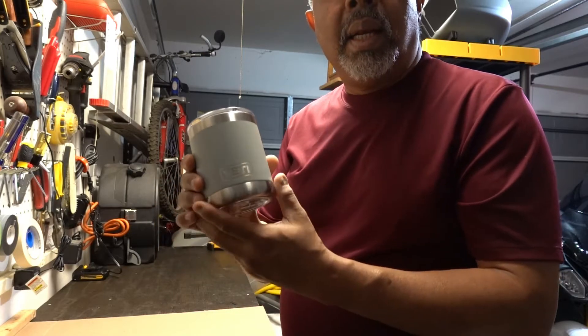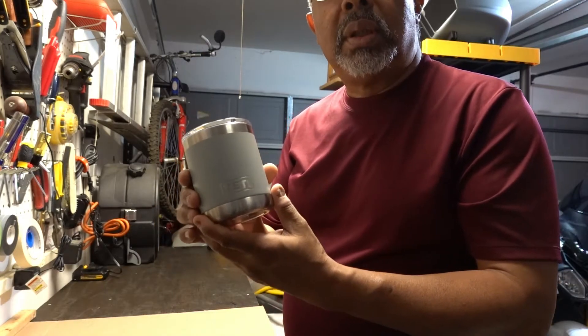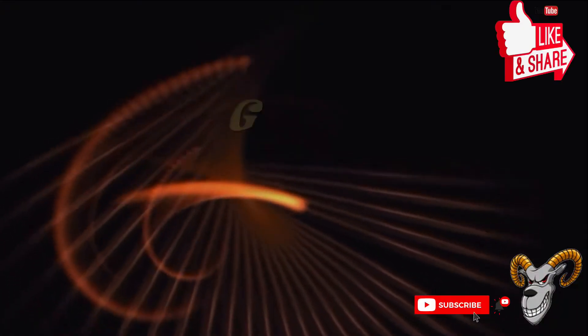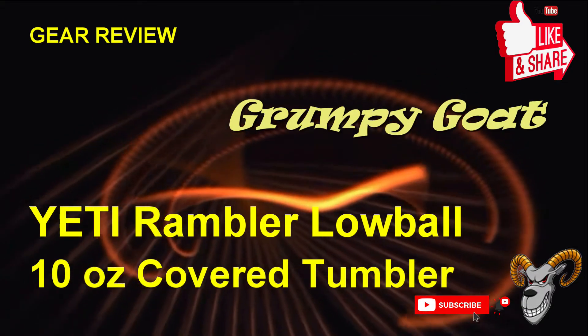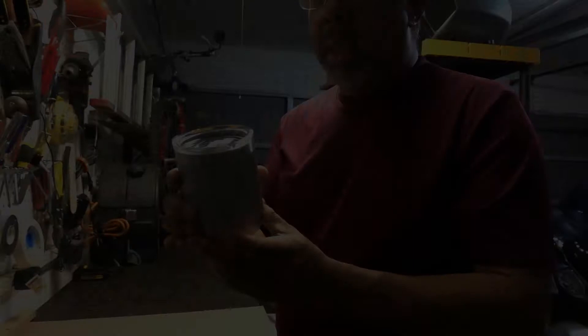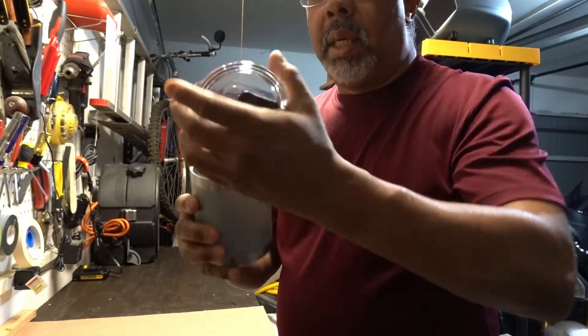This is the Yeti Lowball 10-ounce tumbler that I've just started using in my camping gear. Comes with a nice cover.